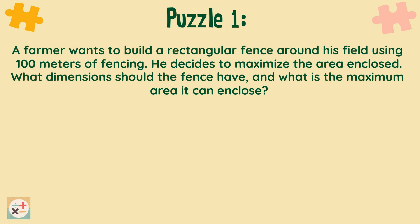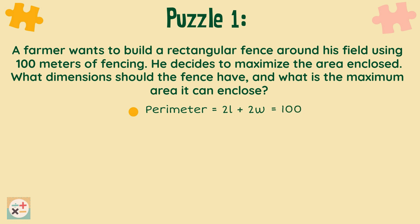A farmer wants to build a rectangular fence around his field using 100 meters of fencing. He decides to maximize the area enclosed. What dimensions should the fence have and what is the maximum area it can enclose? Pause the video now if you want to work it out yourself. The perimeter of a rectangle can be given by P equals 2L plus 2W, where L is the length and W is the width. The total perimeter equals 100 meters. We can simplify the equation to length plus width equals 50.